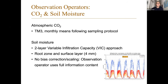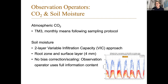A few words on the observation operators. For the atmospheric CO2, we use the TM3 model with monthly mean values following the sampling protocol - whenever the flask samples are filled, we also sample our model, or if it's a continuous station, we continuously sample the model to calculate the monthly means. For the soil moisture, we use a two-layer approach following the variable infiltration capacity model - the VIC model. We have a root zone layer and a surface layer, and use essentially the soil moisture content in the surface layer as the analog to what the SMOS satellite sees. We don't use any bias correction or scaling for the soil moisture data.